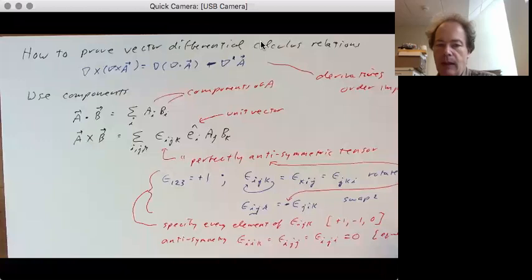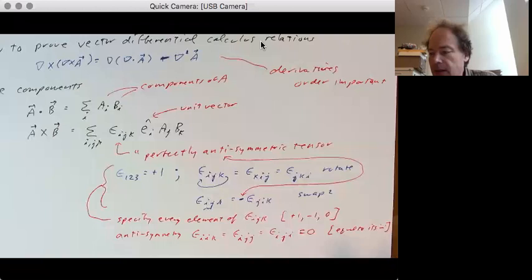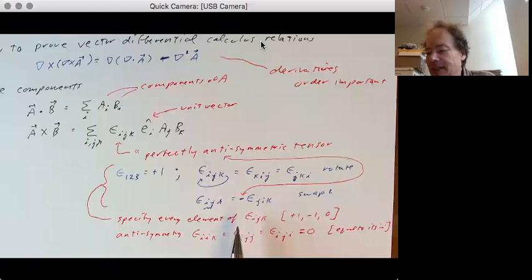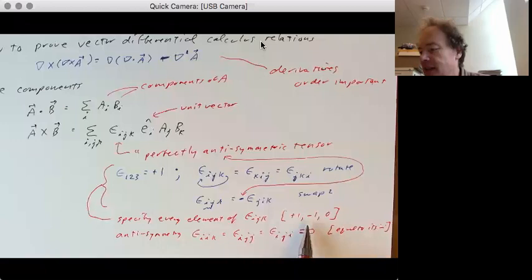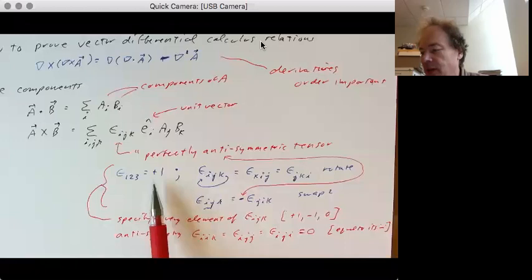So this rule means a good fraction of the elements are in fact zero. It falls from this relation down here. And so that's pretty much where you're getting the zeros from. And if you don't have any repeated indices, then it's going to be a plus one or a minus one, depending on which sort of cycle it belongs to.